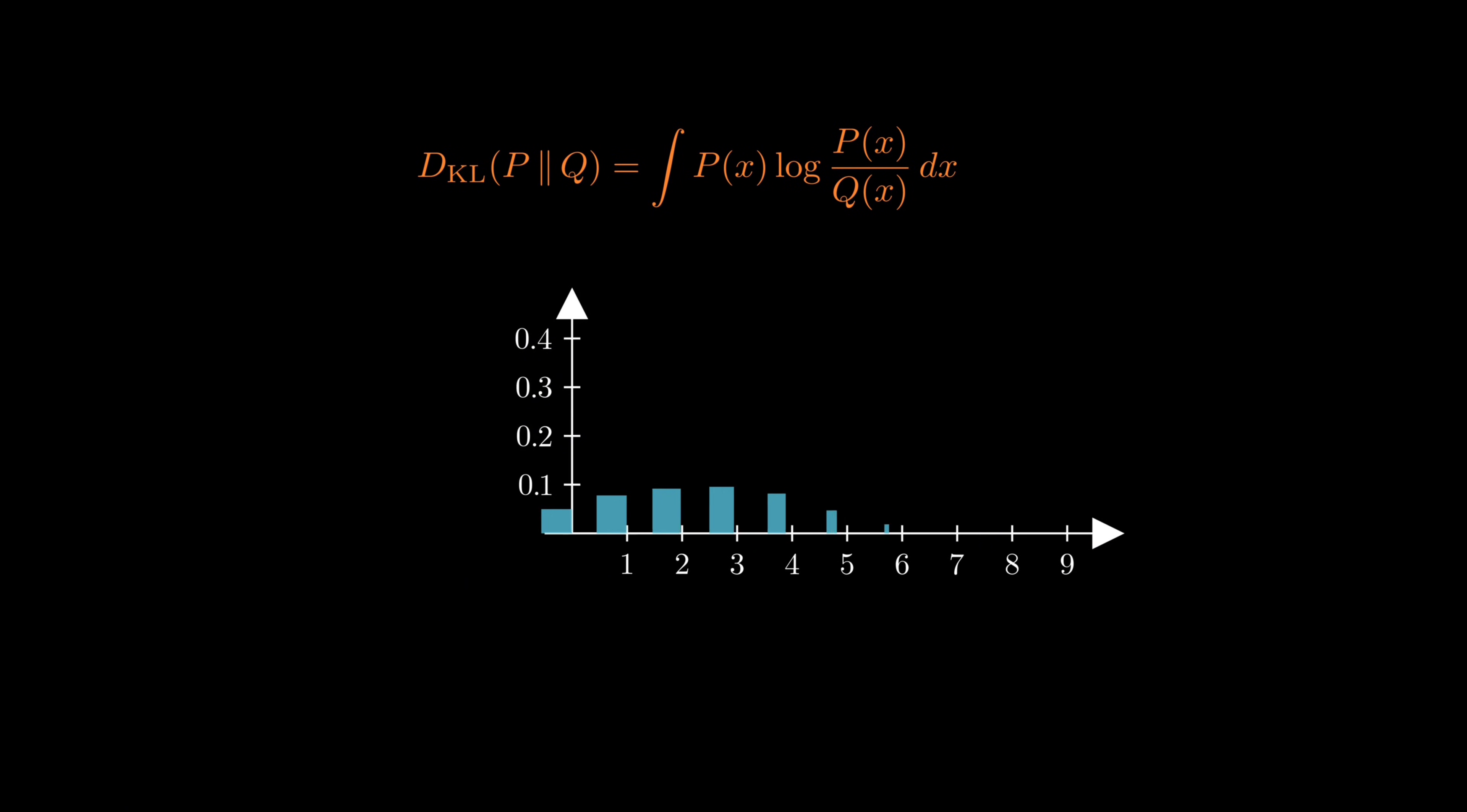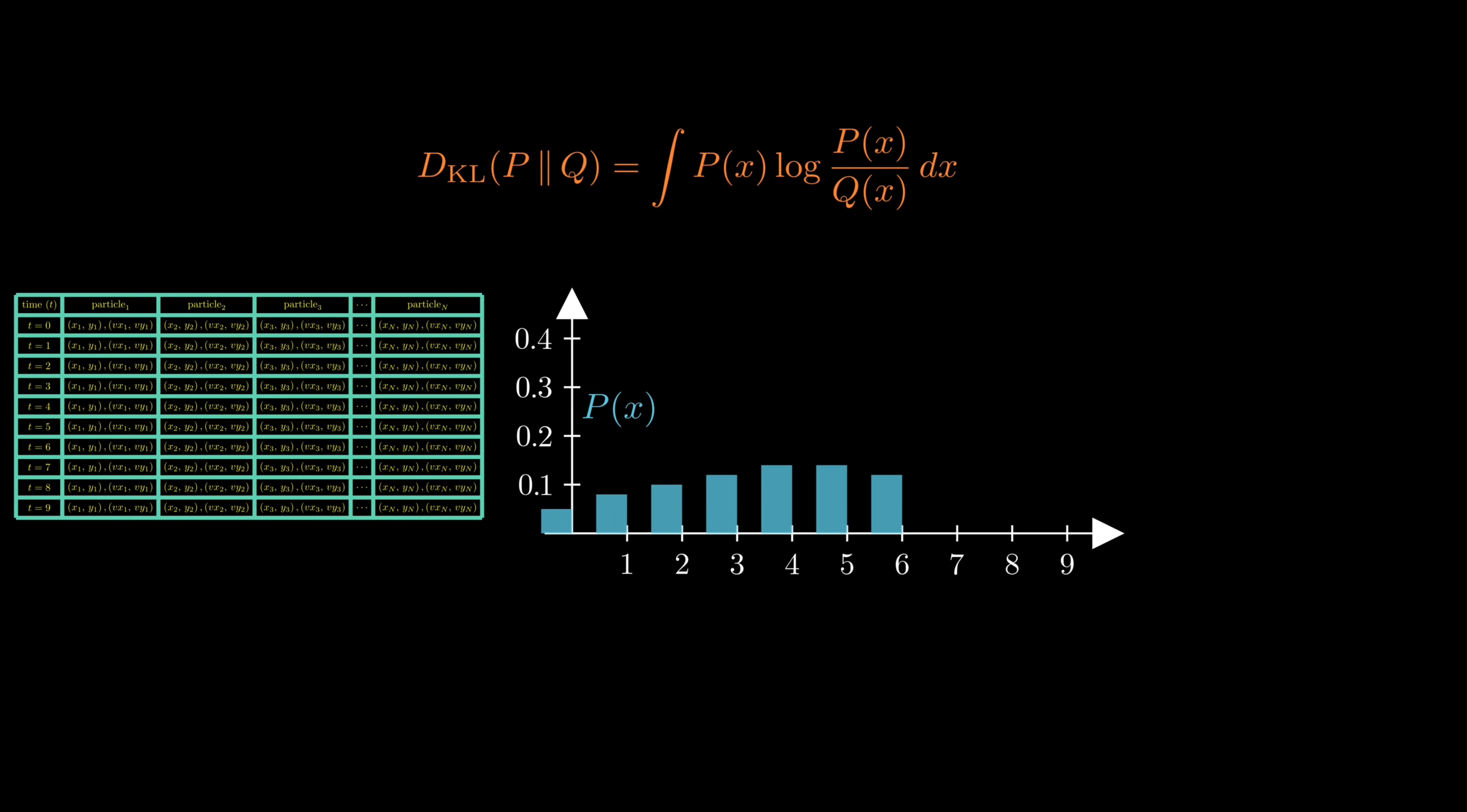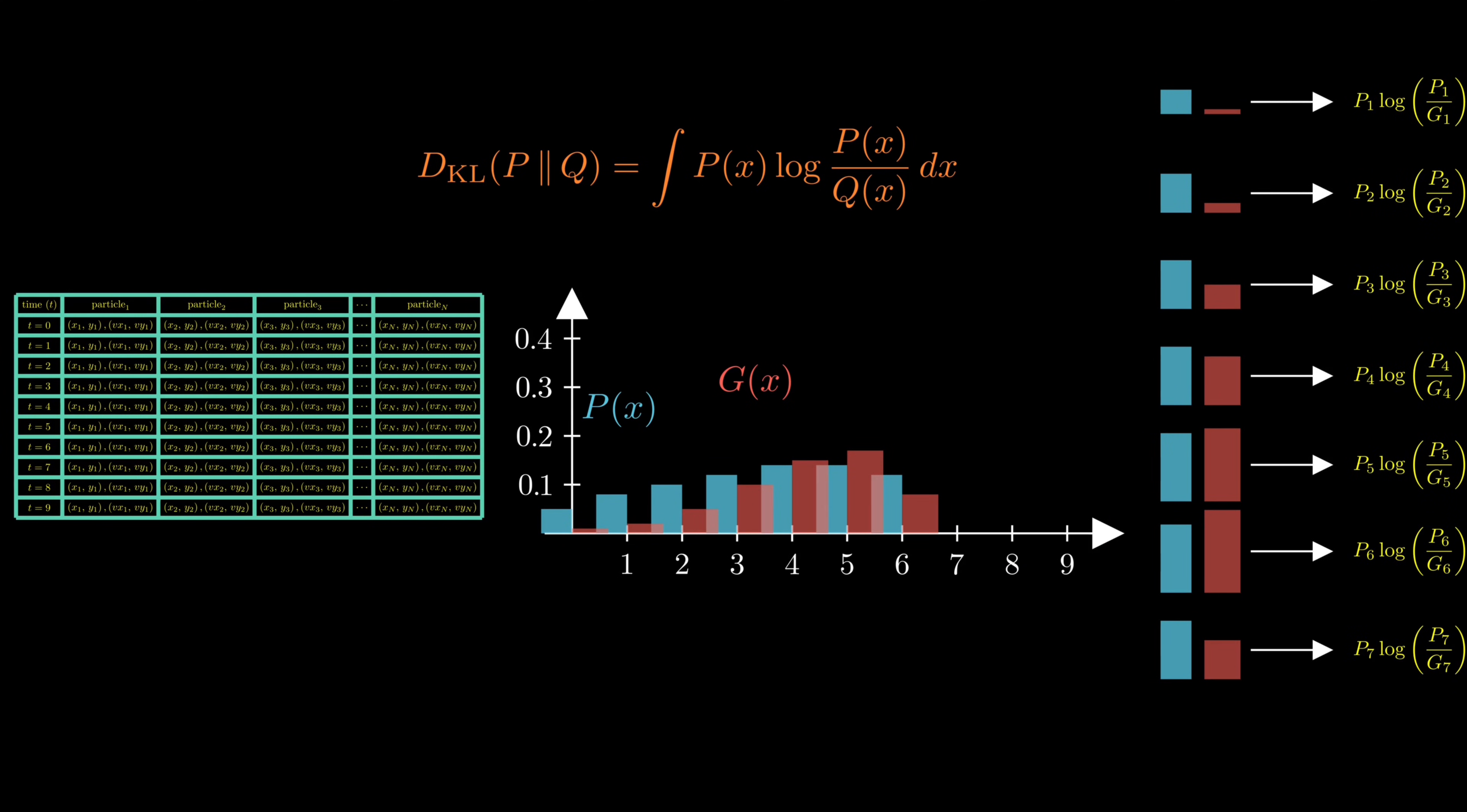In this equation, we denote the true probability distribution of our data set by P and our estimated distribution derived from Taylor expansion by G. Relative entropy, sometimes called Kullbach-Leibler divergence, quantifies how much information is lost when we use G instead of P. More formally, it's defined as the expected difference between the surprise, defined as negative log probability, under the true distribution and that under our estimate.